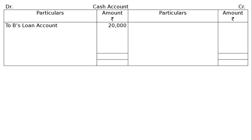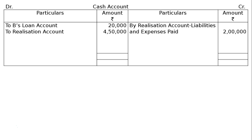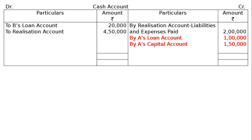In the cash account: B's loan account is debited rupees 20,000 as B has to repay the firm. Cash from realization — assets realized rupees 4 lakh 50,000. On the credit side: realization account — liabilities and expenses paid rupees 2 lakh; A's loan account rupees 1 lakh; A's capital account rupees 1 lakh 50,000; B's capital account rupees 20,000. The total of both debit and credit columns is rupees 4 lakh 70,000. This is the final answer.